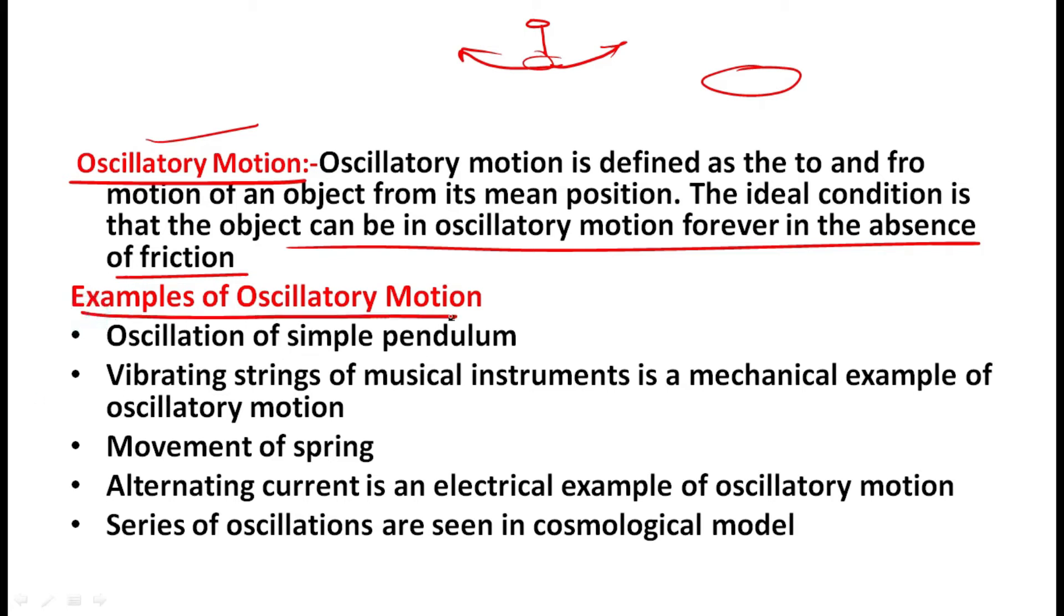There are some examples of oscillatory motion. What are the examples given? Oscillation of a simple pendulum is an example of oscillatory motion. Very important question: which of the following is an example of oscillatory motion? Simple pendulum is an oscillatory motion. Yes, your answer would be that one should be true. Vibrating string of a musical instrument is a mechanical example of oscillatory motion.